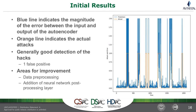Slide 16 shows the initial anomaly detection results on the final test dataset, which the network has never seen before. The orange line represents attacks; the blue line shows the reconstruction error. Visually it appears to be doing a decent job detecting the cyber attacks. Values where the blue line is high indicate high error and anomalous behavior. Attacks three and four match the orange lines very well, clearly identifying the beginning and end of the attack — a very good result.